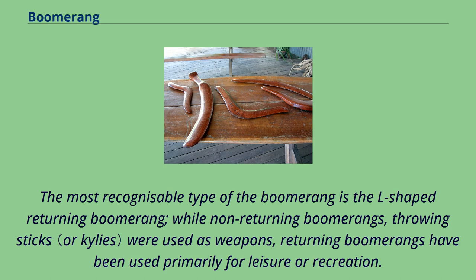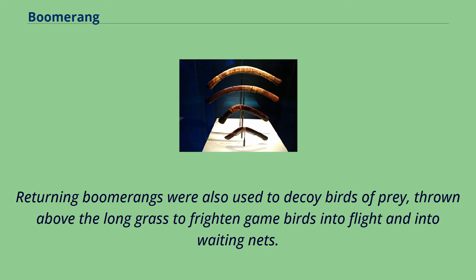The most recognizable type of boomerang is the L-shaped returning boomerang. While non-returning boomerangs and throwing sticks were used as weapons, returning boomerangs have been used primarily for leisure or recreation. Returning boomerangs were also used to decoy birds of prey, thrown above the long grass to frighten game birds into flight and into waiting nets.